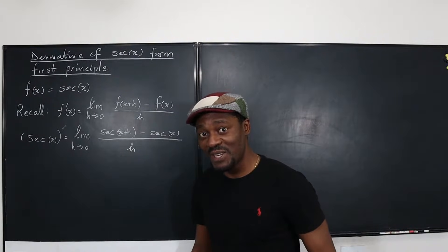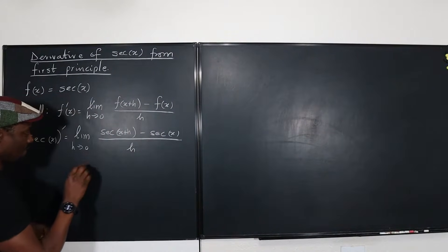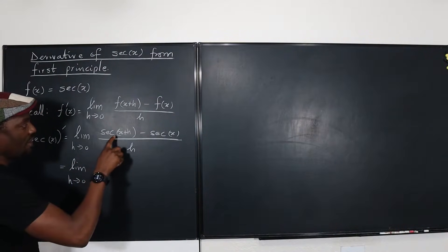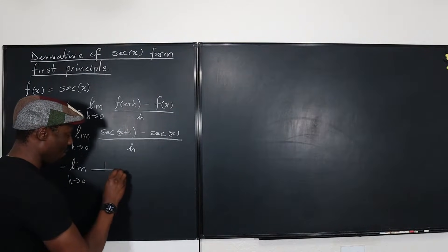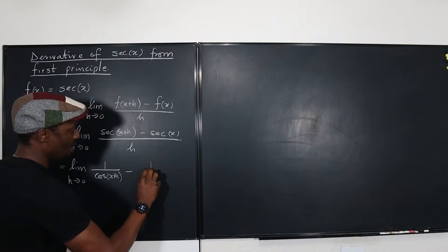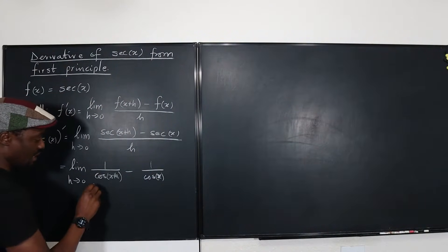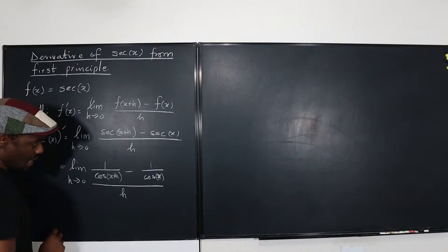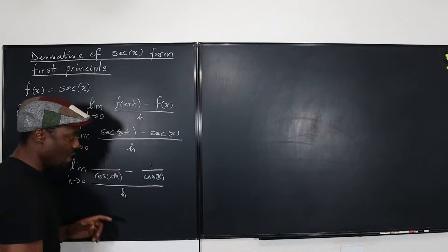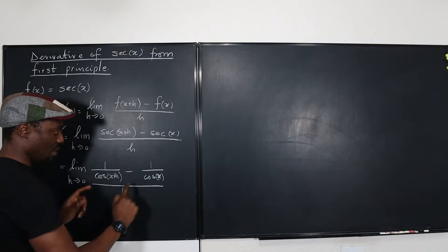You can try this for cosecant before the next video. So basically, I can rewrite this as the limit as h goes to zero of one over cos(x+h) minus one over cos(x), all divided by h — because secant is one over cosine. We don't want complex fractions, so we'll multiply the top and bottom by the product of the denominators to clear them.